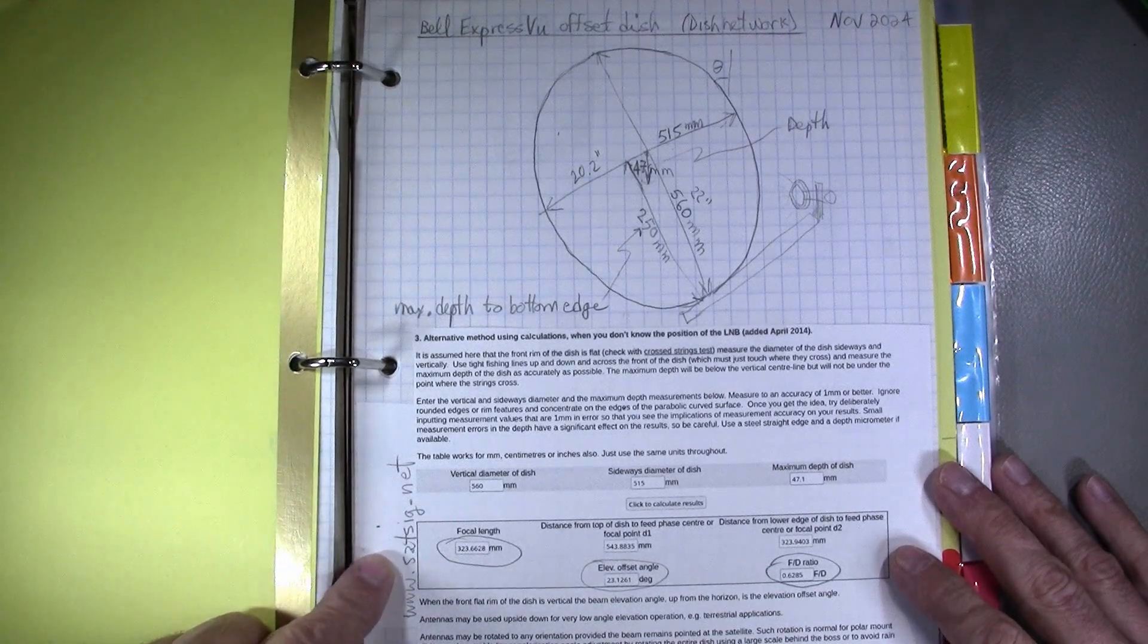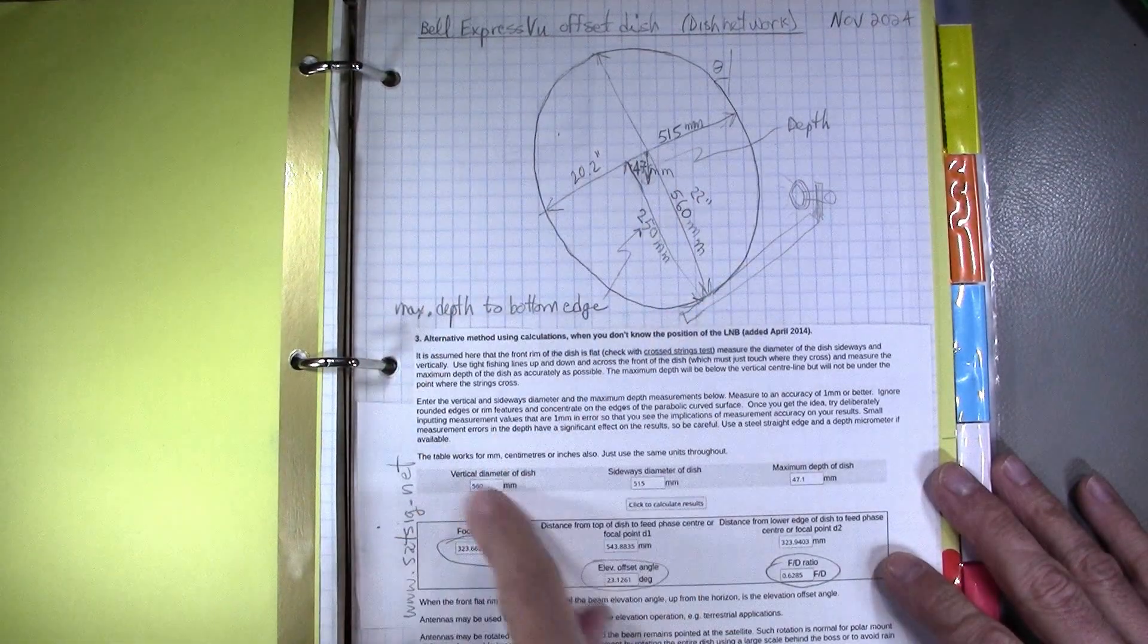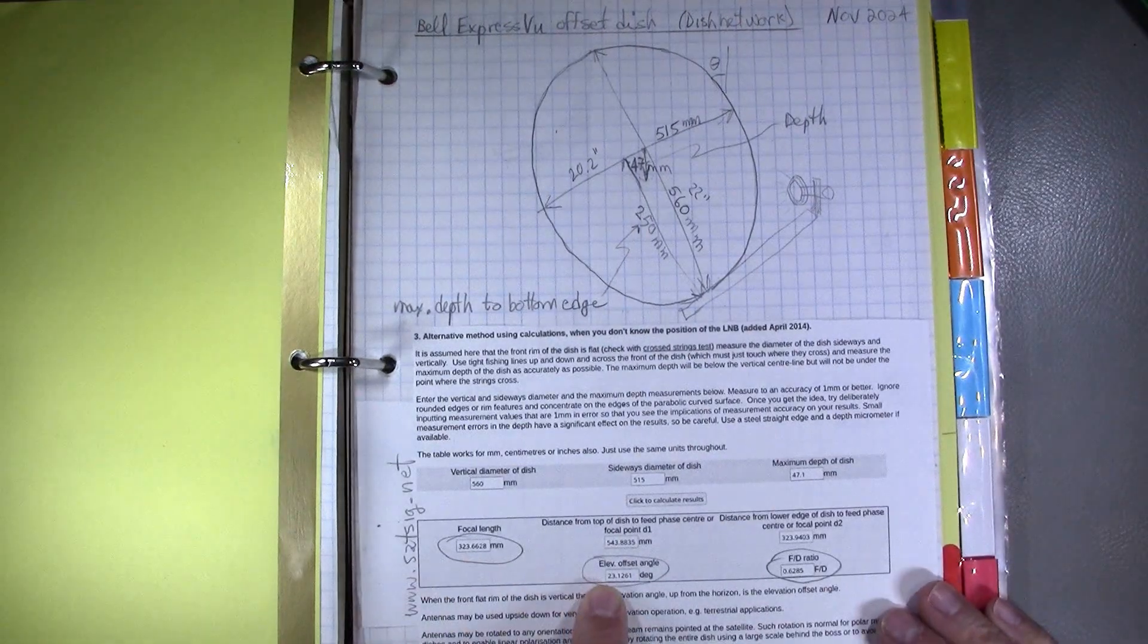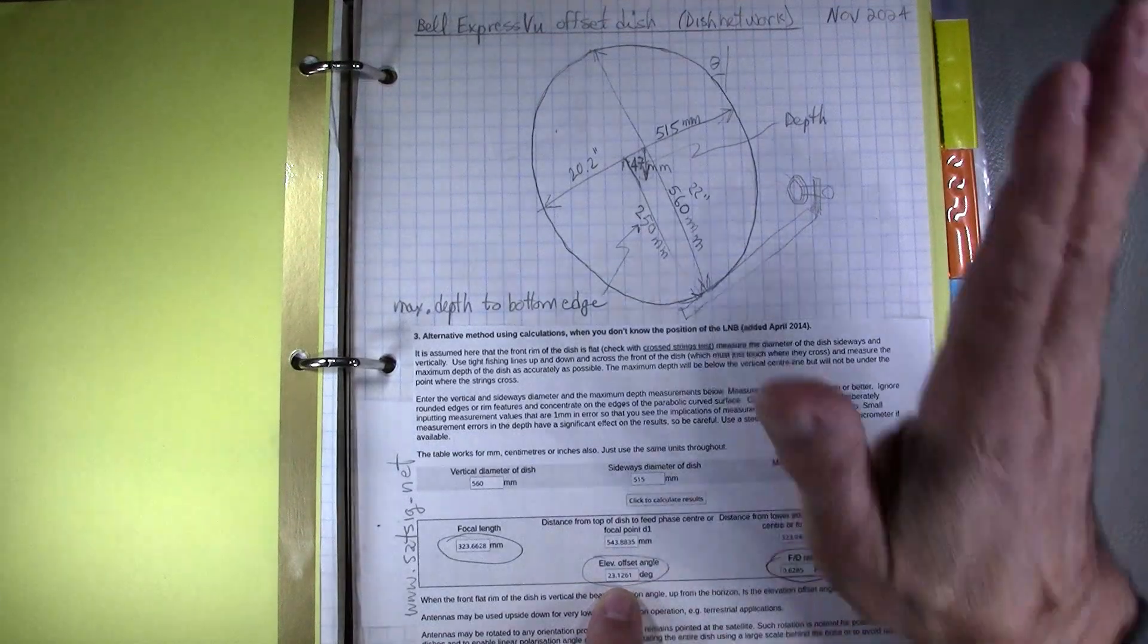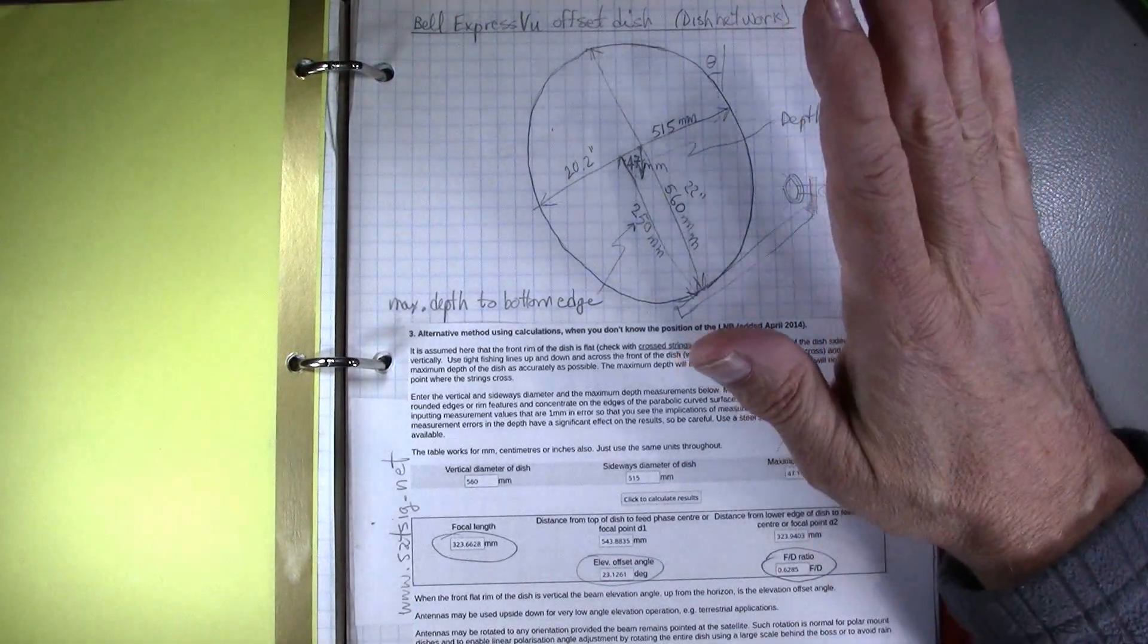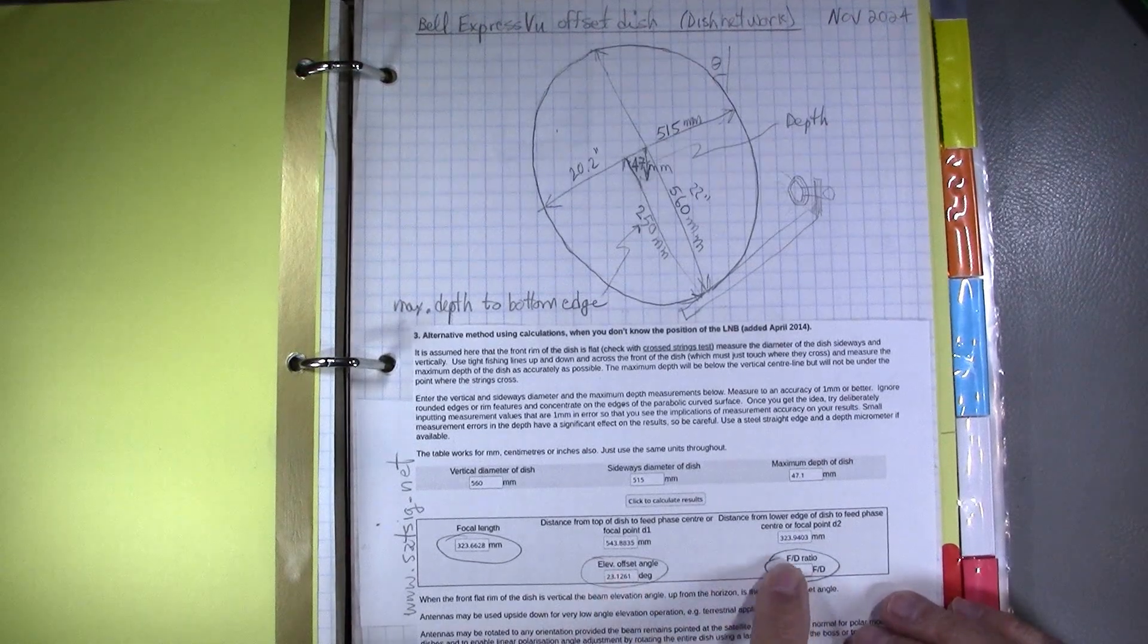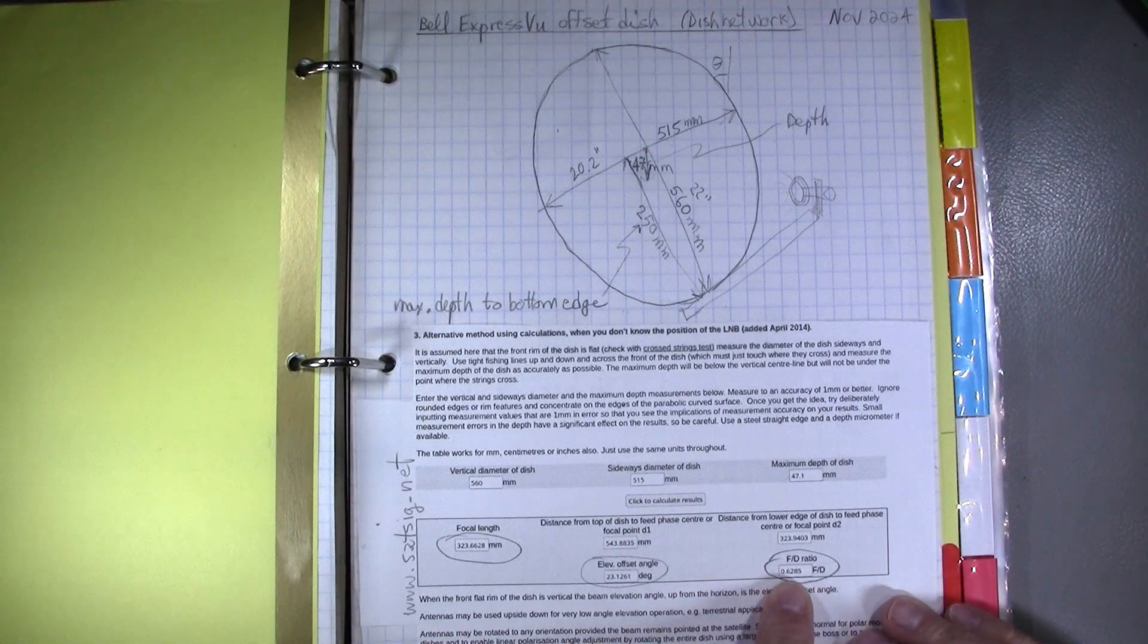So once you've measured these as accurately as possible, you can use calculators from websites. For example satsig.net, they have this method of providing these dimensions and this gives us the focal length, the distance from the focus point to the center of the dish. It gives us the elevation offset angle. This is the angle of course that you have to tilt to get a horizontal pattern. Of course the dish is going to be inclined because it's designed to pick up signals from the sky. If you want to pick up from the horizon it will still be inclined by 23 degrees.